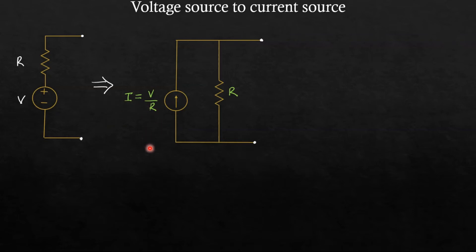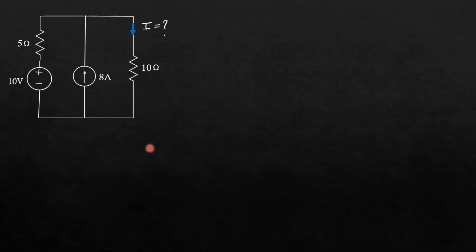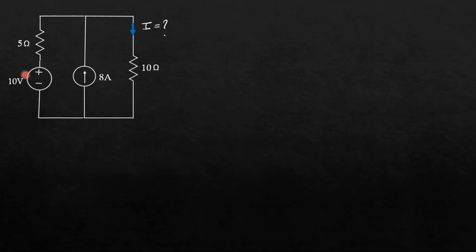Now let us see one problem based on this. This is a circuit given here — we need to find the current in this branch. Here I want a current source, and a voltage source is given to us. I will convert this voltage source into a current source.